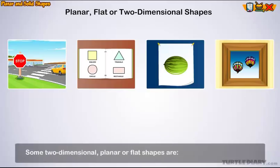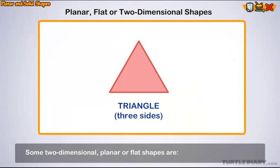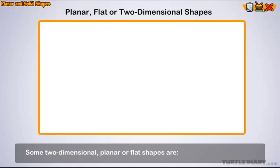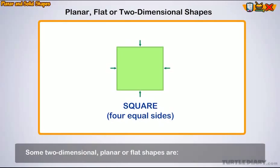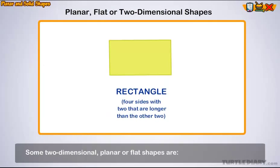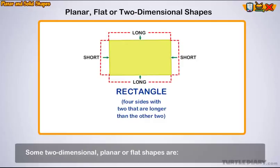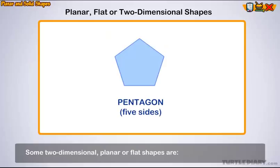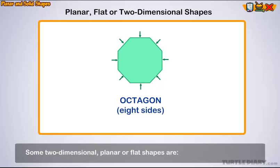Some two-dimensional, planar, or flat shapes are: triangle, three sides; circle, no sides; square, four equal sides; rectangle, four sides with two that are longer than the other two; pentagon, five sides; octagon, eight sides.